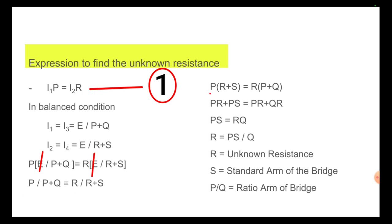And by simplification, P of R plus S is equal to R of P plus Q. Then it becomes PR plus PS is equal to PR plus QR. Here PR and PR are cancelled. Then the remaining term is PS is equal to RQ.